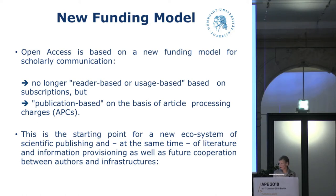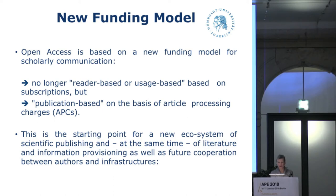The second trend of open access is the new funding model. Funding is no longer reader-based or usage-based on subscription, but publication-based on the basis of article processing charges. In the long run, this will lead to a change of responsibilities. Libraries will continue to inform about APC publications and monitor open access publications. Funding of publication-based texts might however move over to the authors. Under these circumstances, the libraries would no longer be in charge of the publication budget. This can be viewed as a starting point for a new ecosystem of scientific publishing, and at the same time of literature and information provisioning as well as future cooperation between authors and infrastructures.